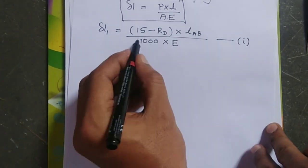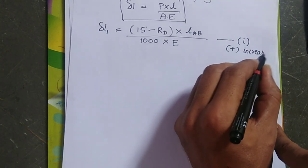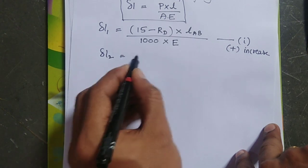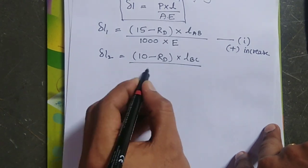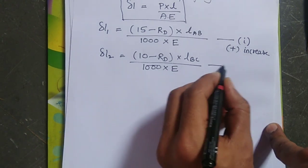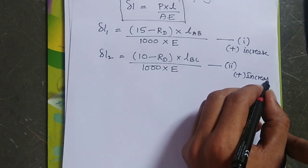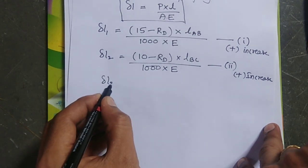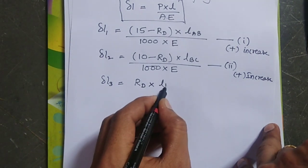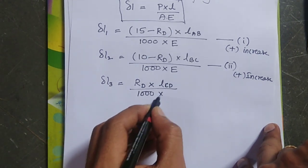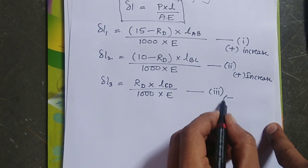This is equation one — delta L1 is an extension, so it is positive. For portion two: delta L2 = (10 − Rd) × LBC / (1000 × E), and this portion is also elongating, so it is positive. For portion three: delta L3 = Rd × LCD / (1000 × E), and this portion is being compressed, so it is negative (decreasing).